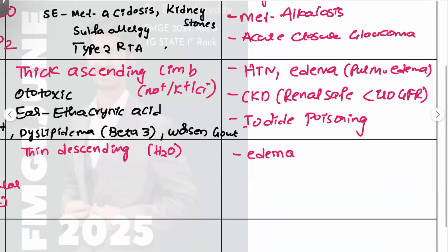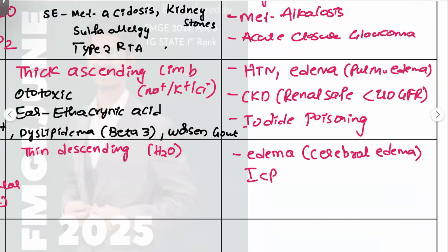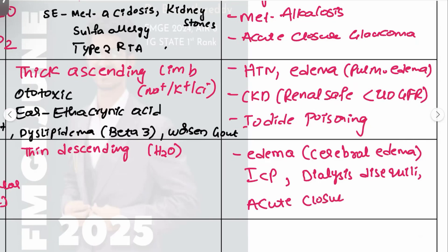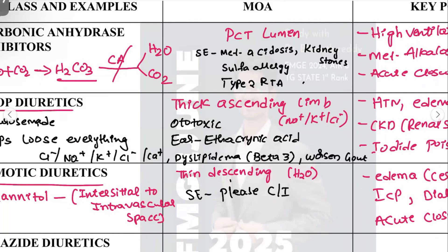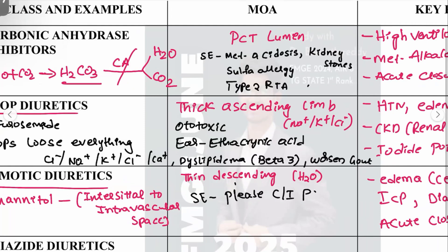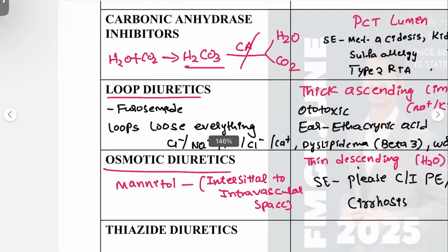Indications for mannitol include cerebral edema, raised intracranial pressure (ICP), dialysis disequilibrium syndrome, and — most importantly — acute angle-closure glaucoma as an emergency drug. Mannitol is contraindicated in pulmonary edema, heart failure, and cirrhosis patients.